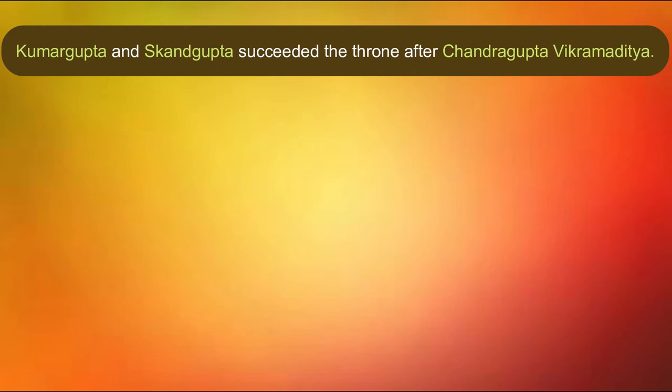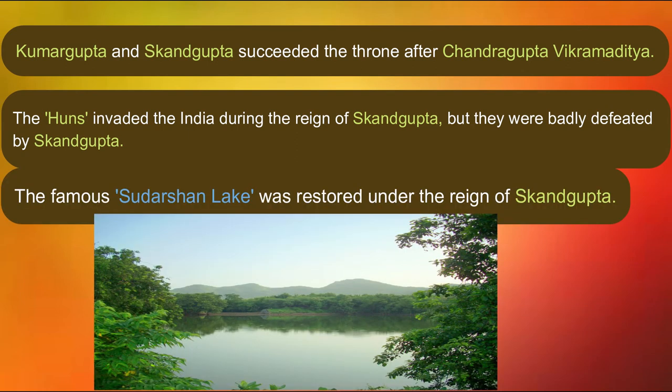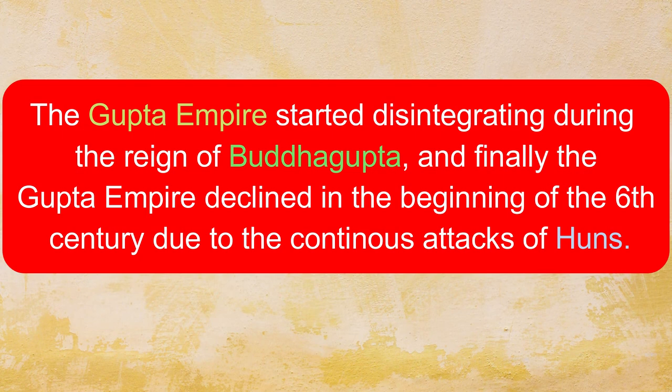After Chandragupta Vikramaditya, Kumaragupta and Skandagupta succeeded the throne. The Huns invaded India during the reign of Skandagupta, but they were badly defeated by Skandagupta. The famous Sudarshan lake was restored under Skandagupta's reign. The Gupta Empire started disintegrating during the reign of Buddhagupta, and finally the Gupta Empire declined in the beginning of the 6th century due to the continuous attacks of the Huns.